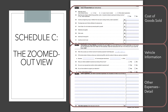The second page begins with the cost of goods sold — another section that is out of scope for the VITA program, as that applies to businesses selling goods with inventory. Part 4 is for vehicle information if there's business use of a vehicle and the taxpayer wants to take the standard mileage rate. And then Part 5 has other expenses, which we'll get into a little more in a few slides.